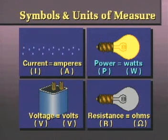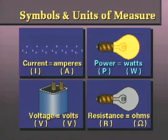Power is represented by the letter P. The unit of measure for power is the watt, and it is abbreviated W.